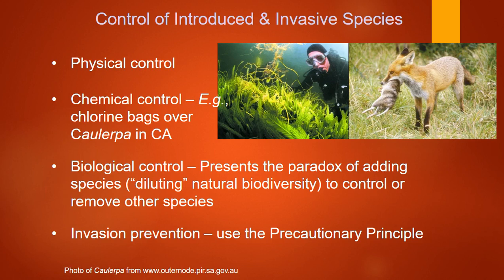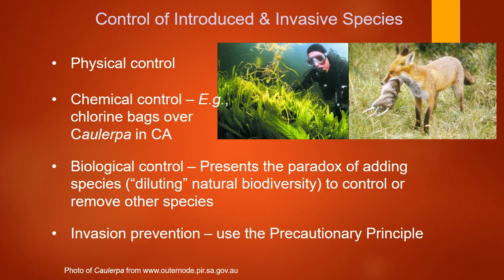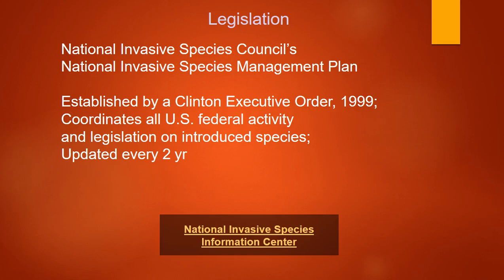Ways to control invasive species include physical control — going in and killing them; chemical control — like placing chlorine bags on invasive plant species; and biological control — using other organisms, like introducing foxes to eat rabbits in Australia, though that went terribly because the foxes ate easier-to-catch native species instead. The best approach is invasion prevention — it's far easier to prevent a problem than to solve one. Some legislation addresses this, which we'll cover more in chapter 17.